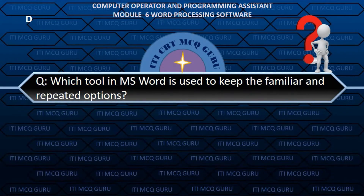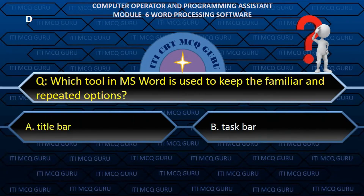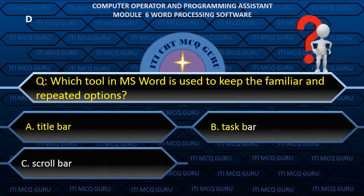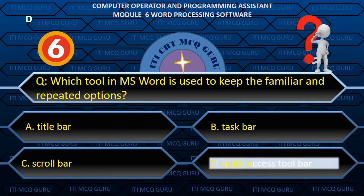Which tool in MS Word is used to keep the familiar and repeated options? D. Quick access toolbar.